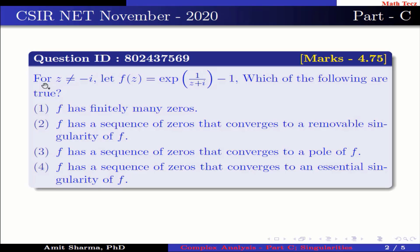The question is: for z not equal to iota, let f(z) equal to exponential of 1 upon (z + iota) minus 1. Which of the following are true? Option 1: f has finitely many zeros. Option 2: f has a sequence of zeros that converges to a removable singularity of f. Option 3: f has a sequence of zeros that converges to a pole of f. Option 4: f has a sequence of zeros that converges to an essential singularity of f.